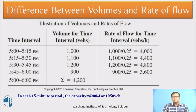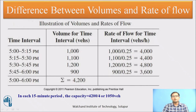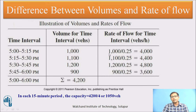Let us understand the difference between volume and rate of flow. In a traffic survey conducted from 5 to 6 PM, each 15-minute volume is recorded as 1000, 1100, 1200, and 900 vehicles. These volumes are converted into equivalent rates of flow by dividing each 15-minute volume by 0.25, giving values in vehicles per hour. This is the main distinction: rate of flow is measured over less than one hour and then converted to an equivalent hourly figure.